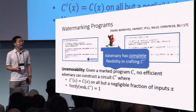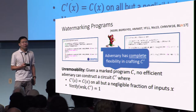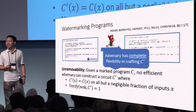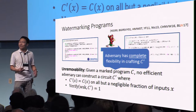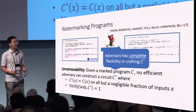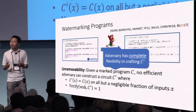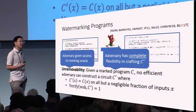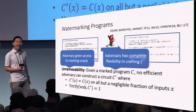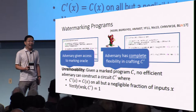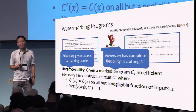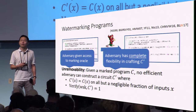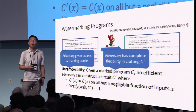I would like to emphasize that the adversary here has complete flexibility in crafting C prime. We are not restricting the kinds of adversarial strategies the adversary is able to employ. It's given a description of a piece of code and it's able to output any arbitrary Boolean circuit that tries to implement the same functionality and yet does not contain the watermark. Moreover, this property should hold even if the adversary is given access to the marking oracle as part of the security game — the adversary is allowed to request marked programs of its choosing and then try to defeat the watermarking scheme by removing the watermark from a new program.